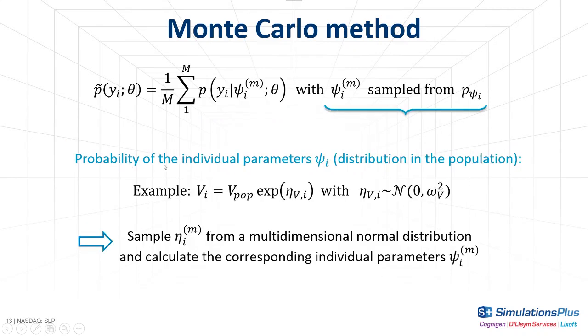If we reuse the same example as before, y follows a normal distribution. So p(y|ψ) is simply the probability density function of a normal distribution that we write like this. If I know the value of ψ, I can easily calculate the model prediction f. We know the data y from the dataset and a is a residual error parameter that is part of the estimated and known population parameters. So everything here can be calculated. p(ψ) represents the probability of the individual parameters and corresponds to the distribution in the population. For example, if we have set a log-normal distribution for the volume, we can simply sample etas from a normal distribution and calculate the corresponding individual parameter V. We actually perform this step at the same time for all individual parameters, for example volume, clearance and ka, by sampling from a multidimensional normal distribution and we calculate the corresponding parameters ψ.